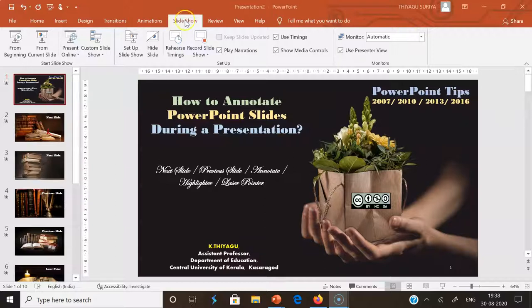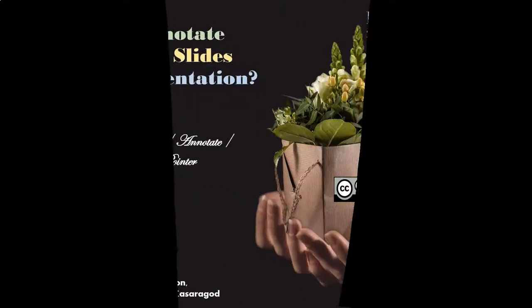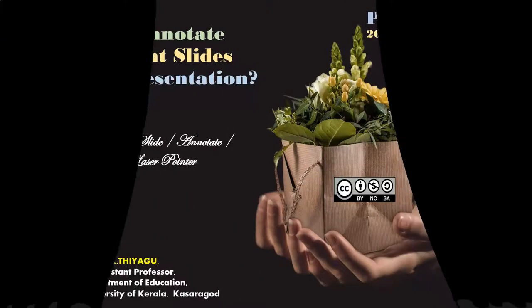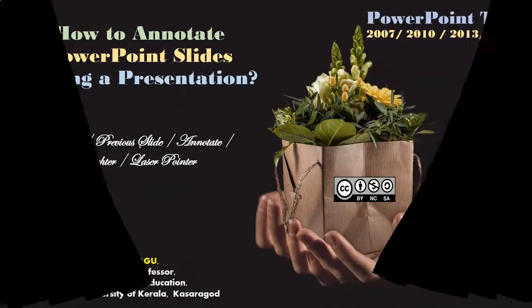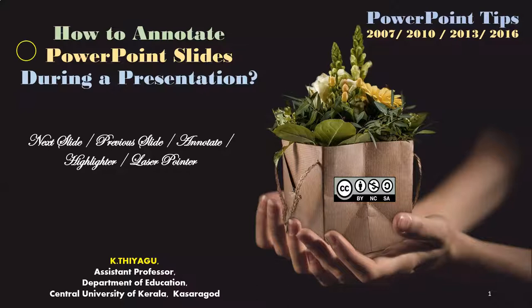I am clicking the Slideshow tab and finding the options there. The first one is called 'From Beginning' and the other is 'From Current Slide.' I want to go with 'From Beginning,' so I am clicking that. Once we click it, the first slide will open in slideshow view.